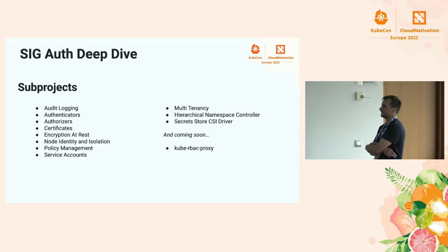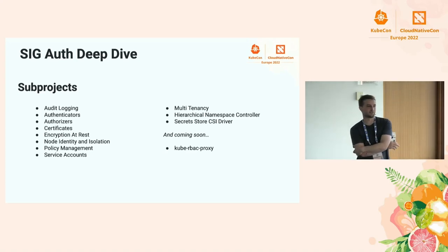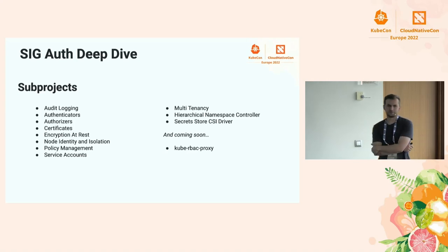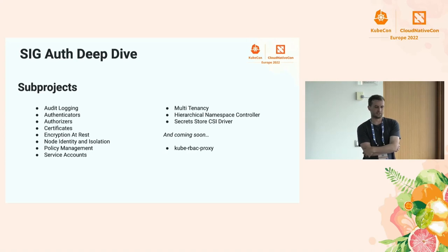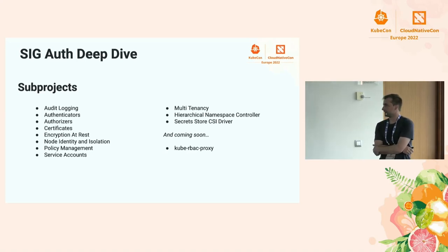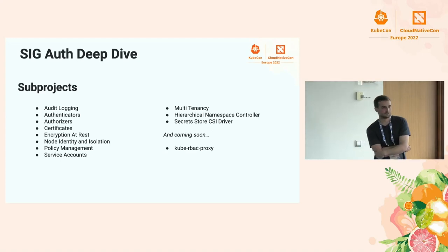Here is a full list of subprojects. On the left, in the Kubernetes core codebase, we have: audit logging subsystem, all authenticators, authorizers including RBAC and node authorizer, certificates API and related infrastructure — including signers and approvers for kubelet certificate rotation for both server and client certs — encryption at rest via the KMS plugin, and node isolation and identity.